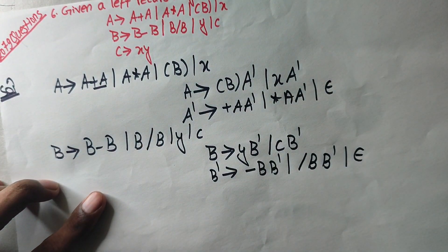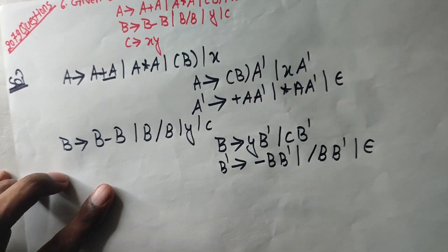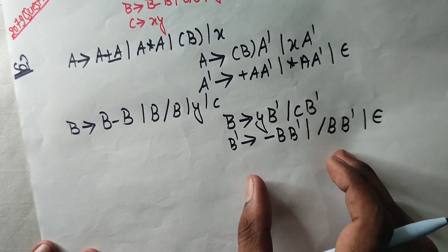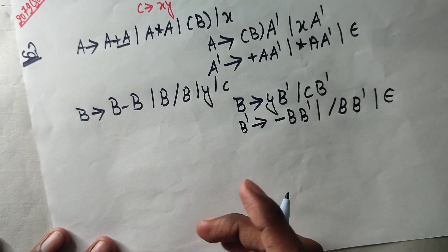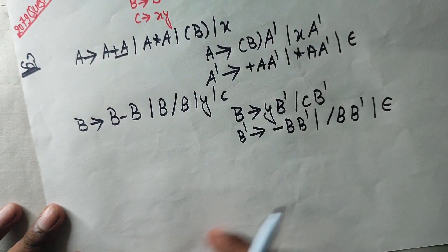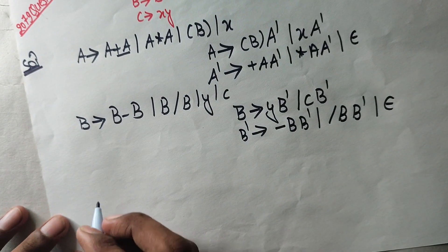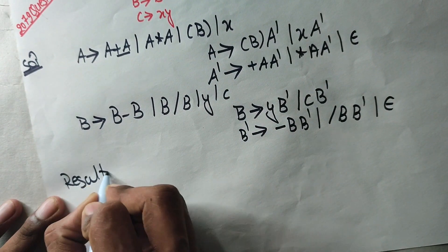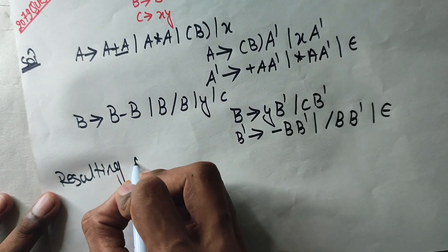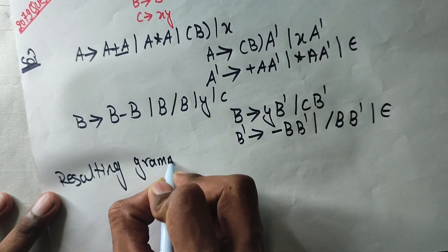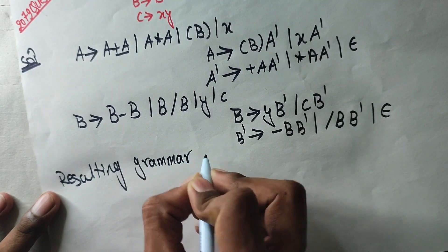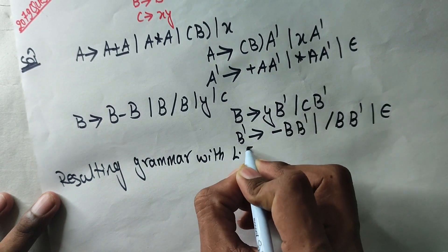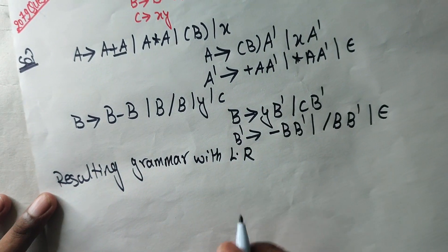Last time, b' is equal to b'1. Now, c will be the best to test. Now, the final one is to write the key question. Let's write the key. Resulting grammar with left-recursion.